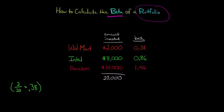Walmart is 2 twentieths of your position, we're going to multiply that by Walmart's beta. Now what we're going to do is we're going to add to that, we're going to do Intel, which is $8,000, and 8,000 out of 20,000 is the same as 8 over 20. And then we're going to multiply that by Intel's beta, which is 0.86.